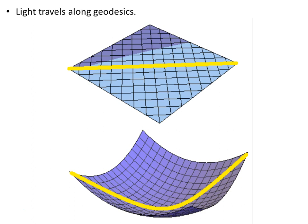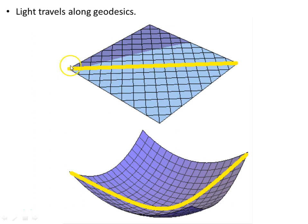Light travels along geodesics. In flat Minkowski spacetime, those straight lines are the lines of Euclidean geometry. In curved spacetime, light follows the curvature of spacetime. Geodesics are the straightest possible lines in the given space.